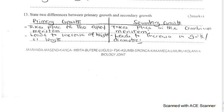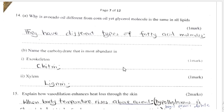Question 13: State two differences between primary growth and secondary growth. Primary growth leads to an increase in height or length, while secondary growth leads to an increase in girth or diameter of the stem.